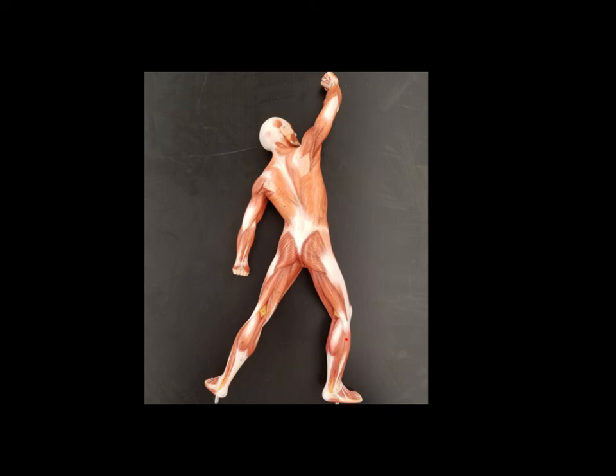Down along the lateral portion of the lower leg, this is the fibularis longus or also known as the peroneus longus. We can see each gastrocnemius very clearly here.